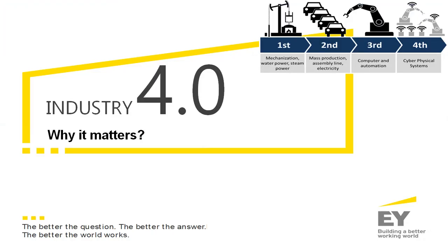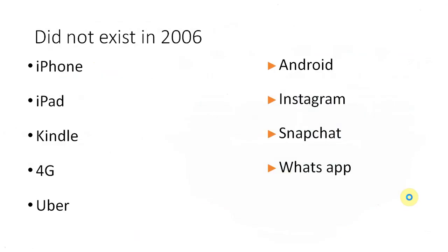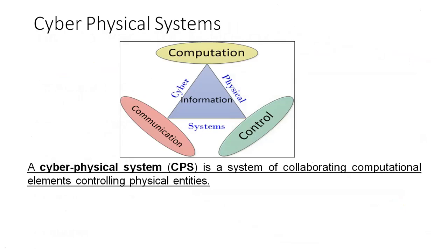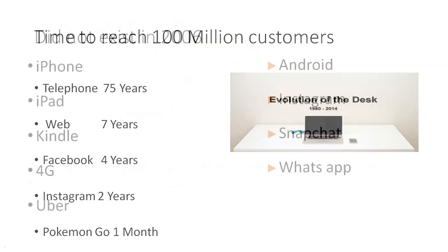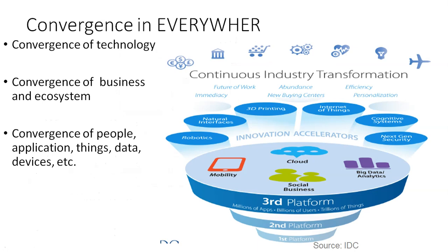In Industry 4.0, you can see robots connected with sensors — IoT-based, sensor-based, with artificial intelligence. This is the cyber-physical system. The definition of a cyber-physical system is: a system of collaborating computational systems controlling physical entities. It means we are controlling all physical identity by computation — with computation, communication, control, information flow, and artificial intelligence. Convergence of technology is very important right now.